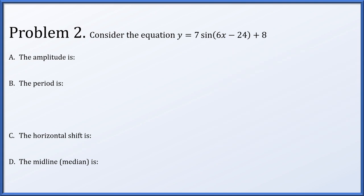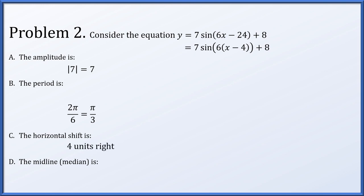Problem two: consider the equation y equals 7 times the sine of the quantity 6x minus 24 plus 8. The first thing I'm going to do is, inside the sine function, factor a 6 out so that we have 6 times x minus 4. The amplitude is 7, the period is 2 pi over 6, which is pi over 3, the horizontal shift is 4 units to the right — it was important to factor that 6 out to isolate that 4 — and the midline or median is y equals 8.